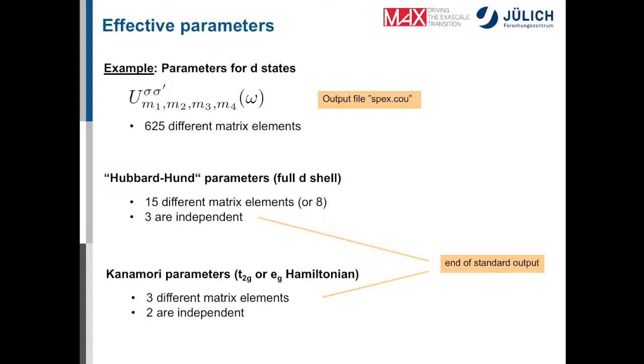Sometimes in DMFT calculations, they further make a simplification of the electron-electron interaction. They restrict the operators only to density operators, which have some advantages in the application of the impurity solver. And then instead of 15 different matrix elements, you only have 8 different matrix elements. And out of these 15 or 8, only 3 are independent parameters. The rest can be constructed from them by simple linear combinations. And those independent parameters are also given at the end of the standard output of the Spex code. So you don't have to necessarily look into this file.